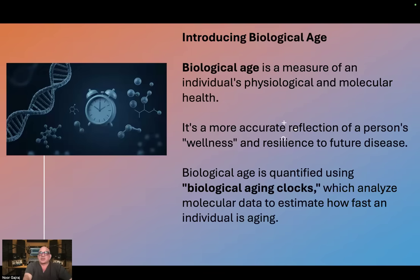Biological age is a measure of an individual's physiological and molecular health. It's a more accurate reflection of a person's wellness and resilience to future disease. Biological age is quantified using biological ageing clocks, which analyse molecular data to estimate how fast an individual is ageing.